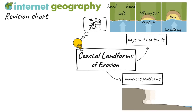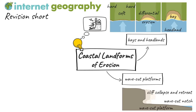A wave-cut platform is a wide, gently sloping surface found at the cliff base and extends into the sea. It is formed when the sea attacks a weakness in the base of the cliff — for example, a joint in chalk. A wave-cut notch is created by erosional processes such as hydraulic action and abrasion. As the notch becomes larger, the cliff becomes unstable and collapses because of gravity. The cliff then retreats inland and the material from the collapsed cliff face is eroded and transported away, leaving a wave-cut platform. The process repeats over time.